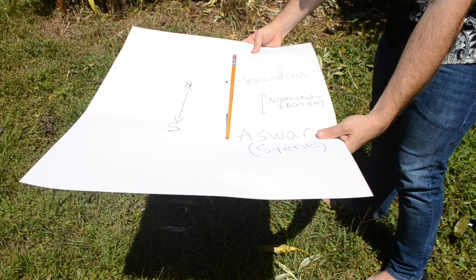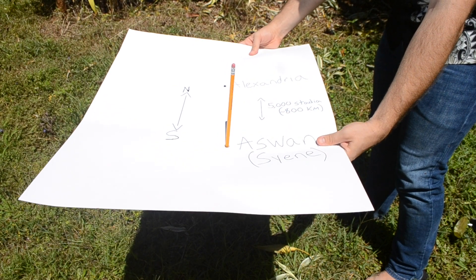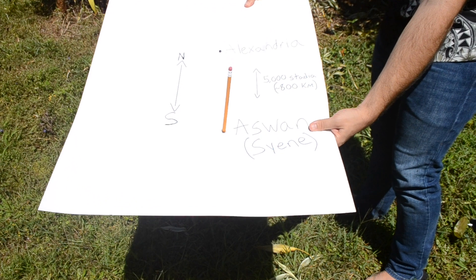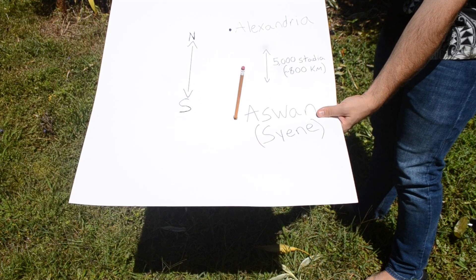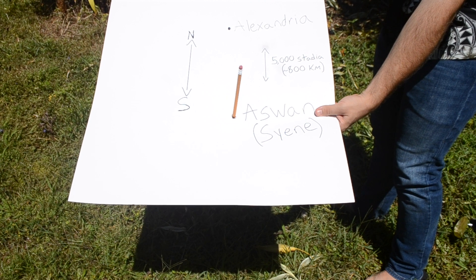Step two: he assumed on the summer solstice that the sun was directly overhead in Aswan at noon. That means that a vertical rod stuck in the ground will cast no shadow. This assumption was a little bit wrong, but it was close enough. You can simulate this by sticking a pencil in a piece of poster board and aiming it at the sun until there is no shadow. When this occurs in Hawaii, this is called Lahaina noon.